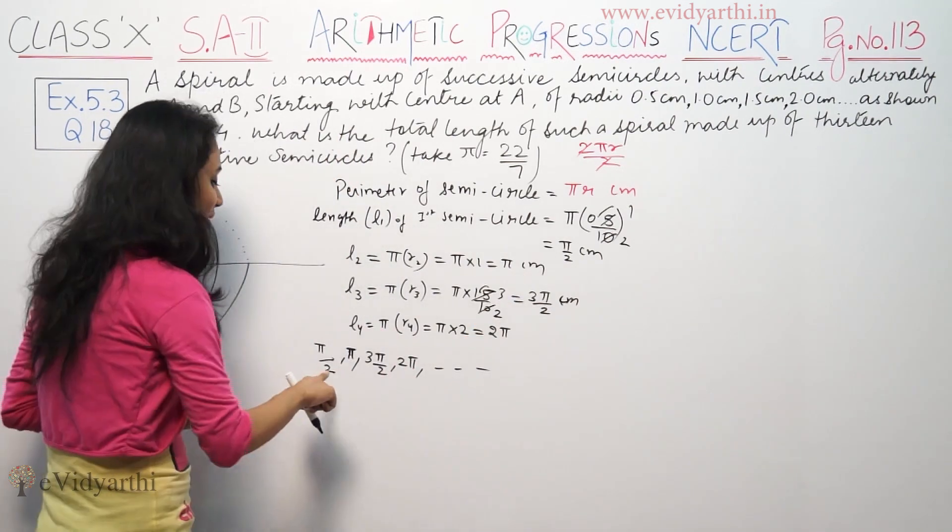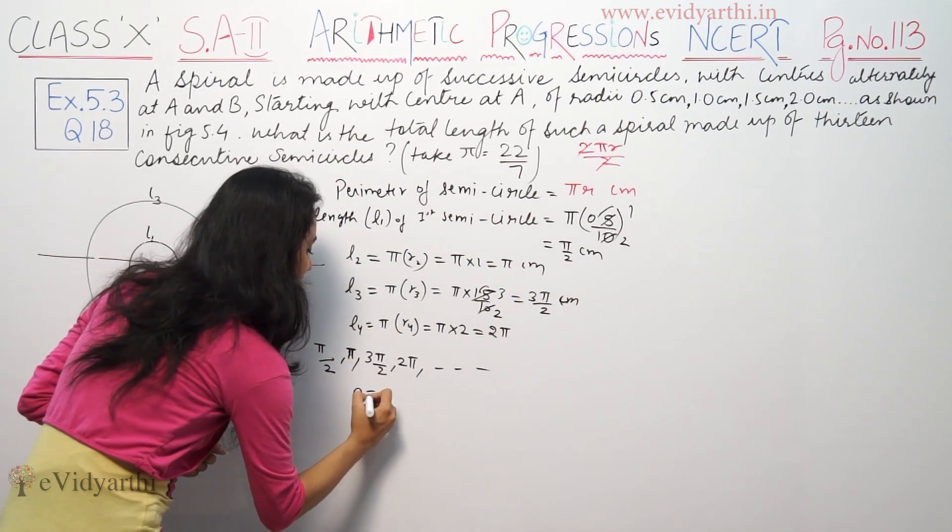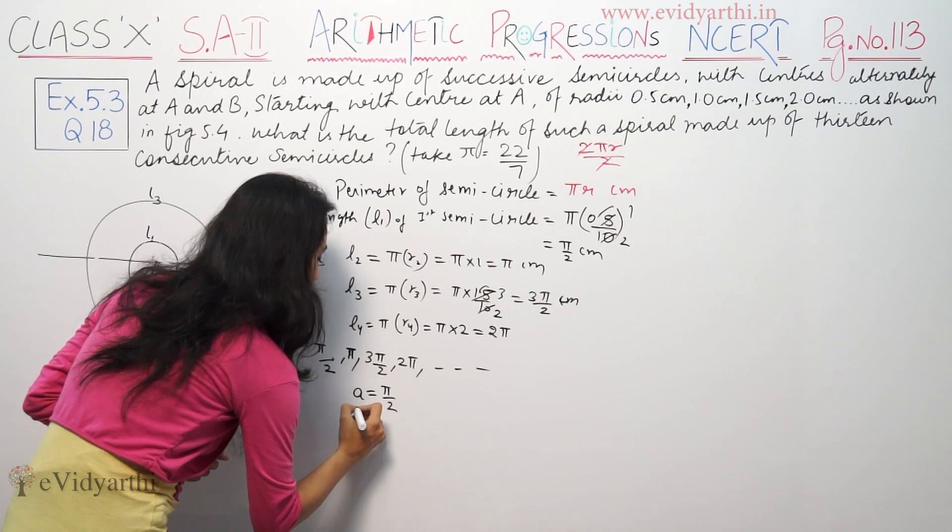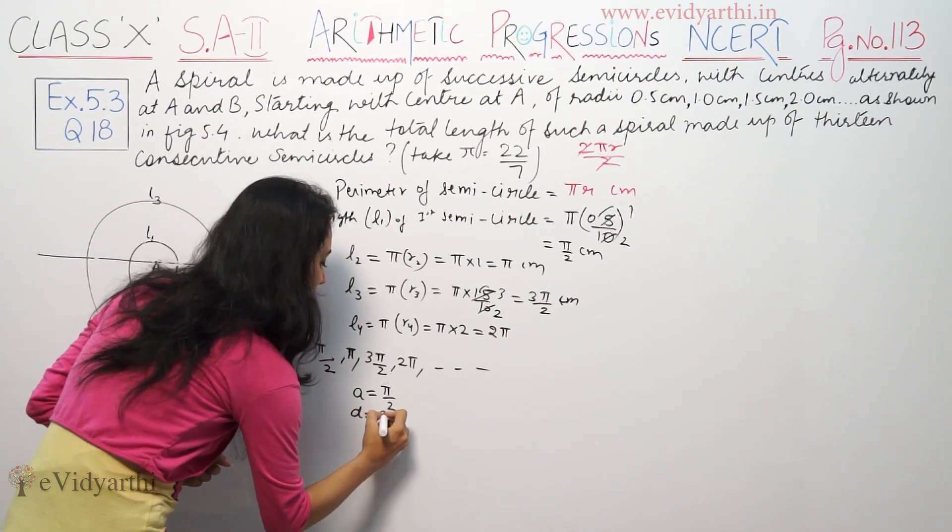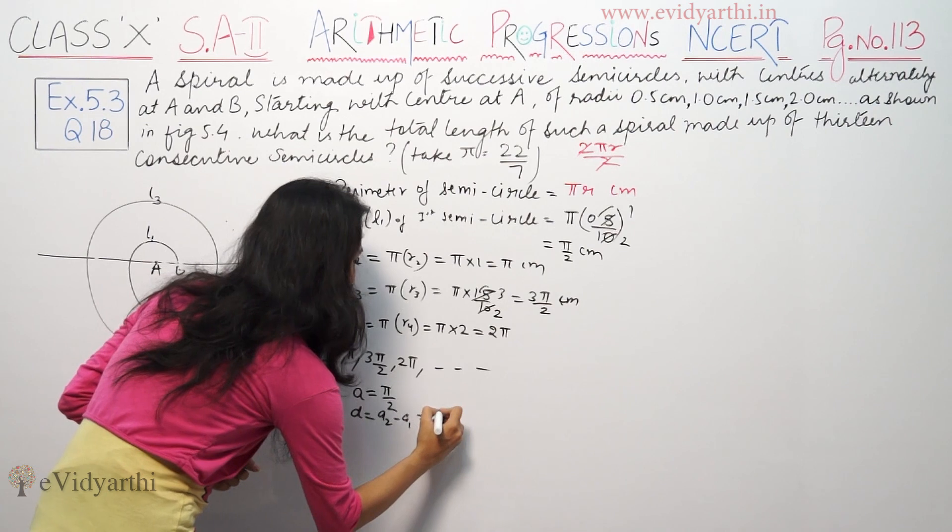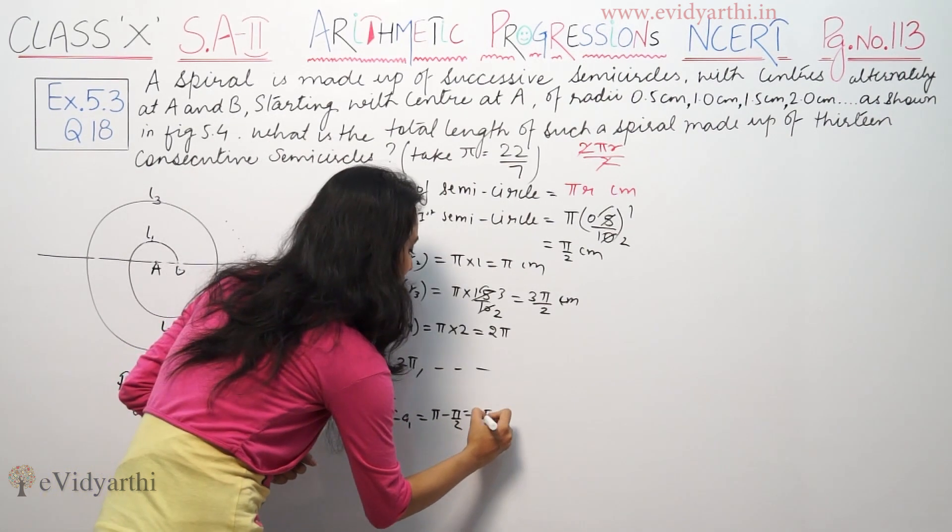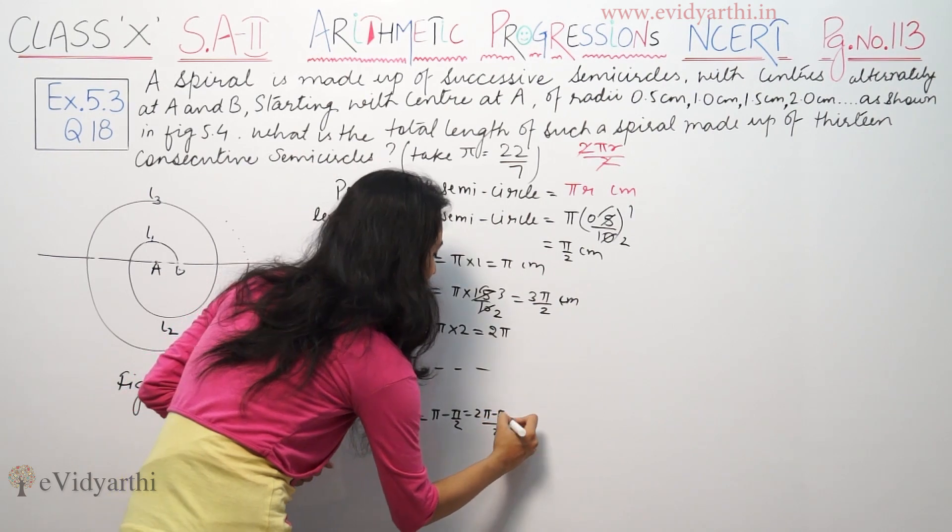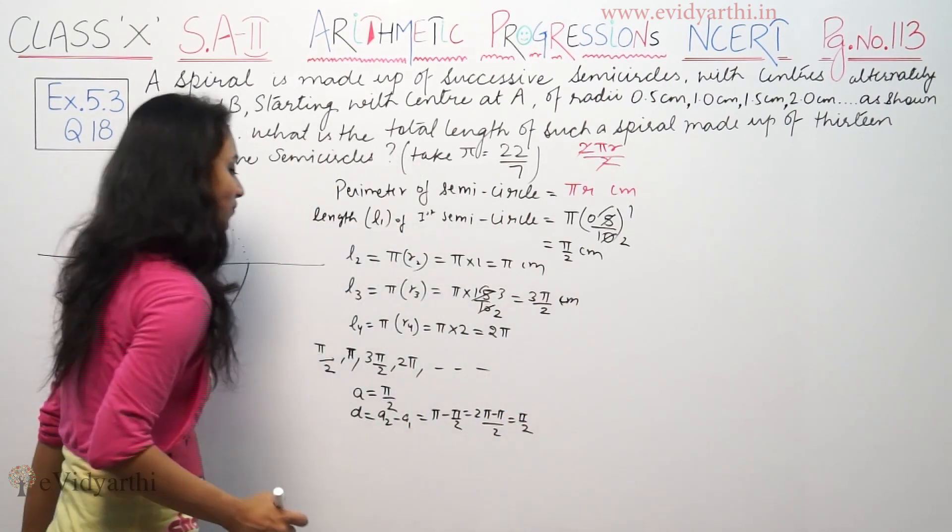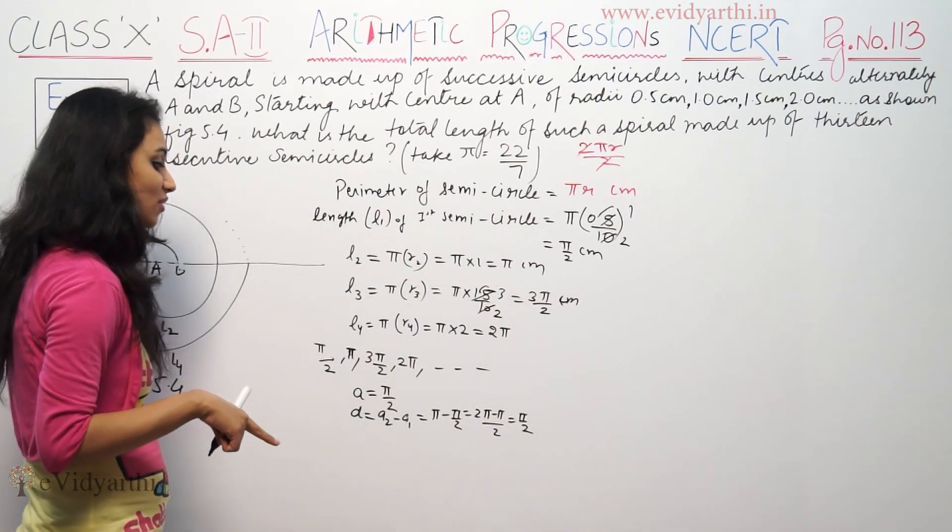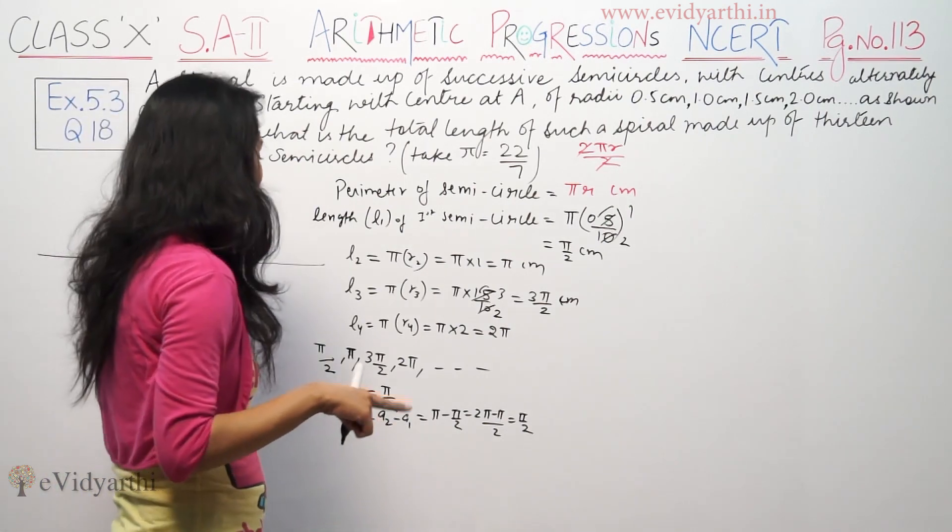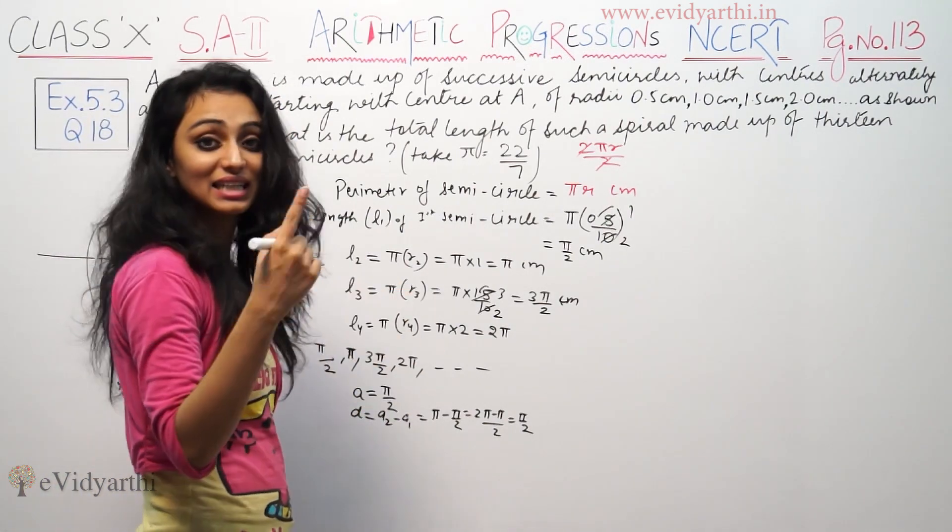π/2. So 2π minus π/2 means π/2. So this is our common difference, the common difference.